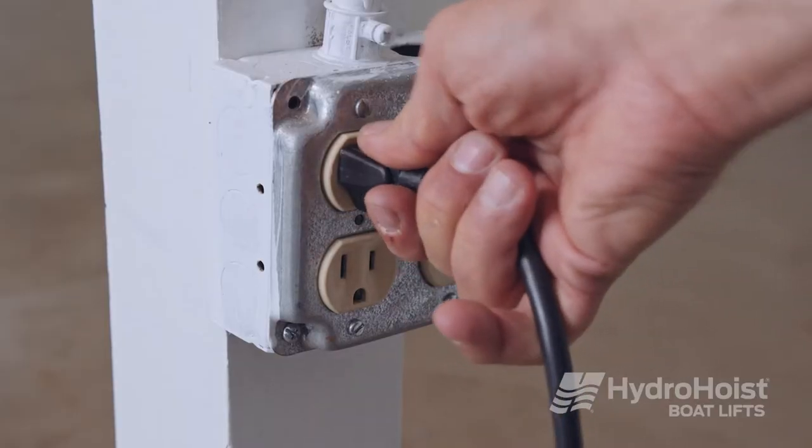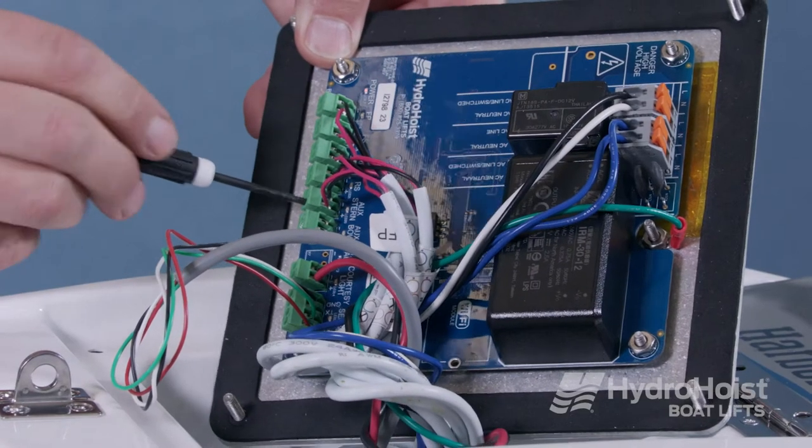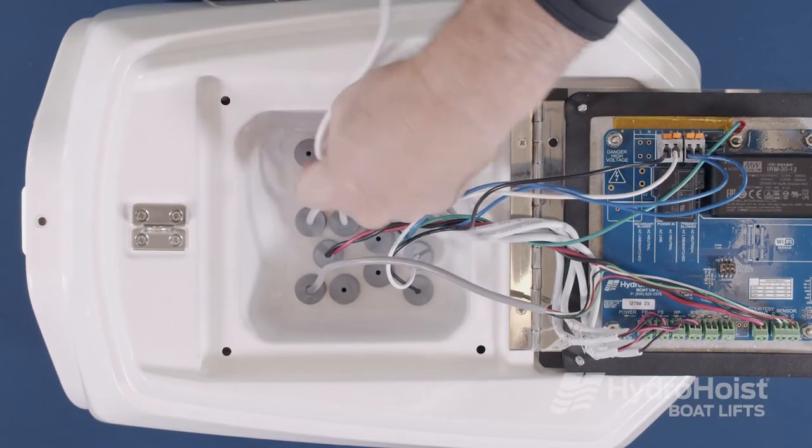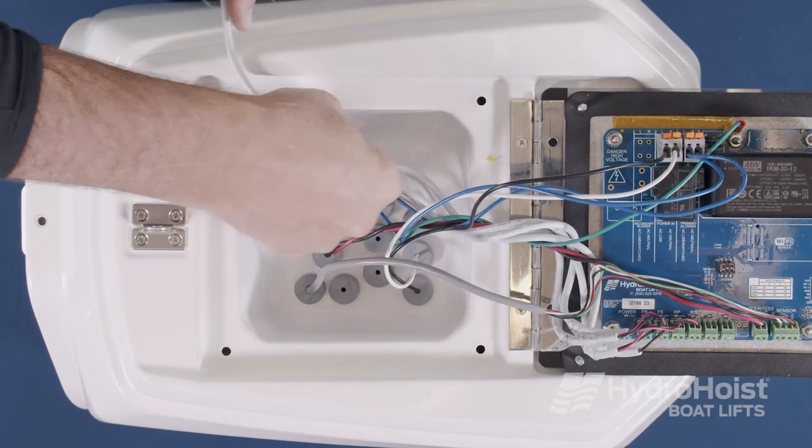The next step should be with power disconnected from the control. Remove the valve leads from the connection on the main control board. Feed the valve cable through the watertight gland in the front housing.